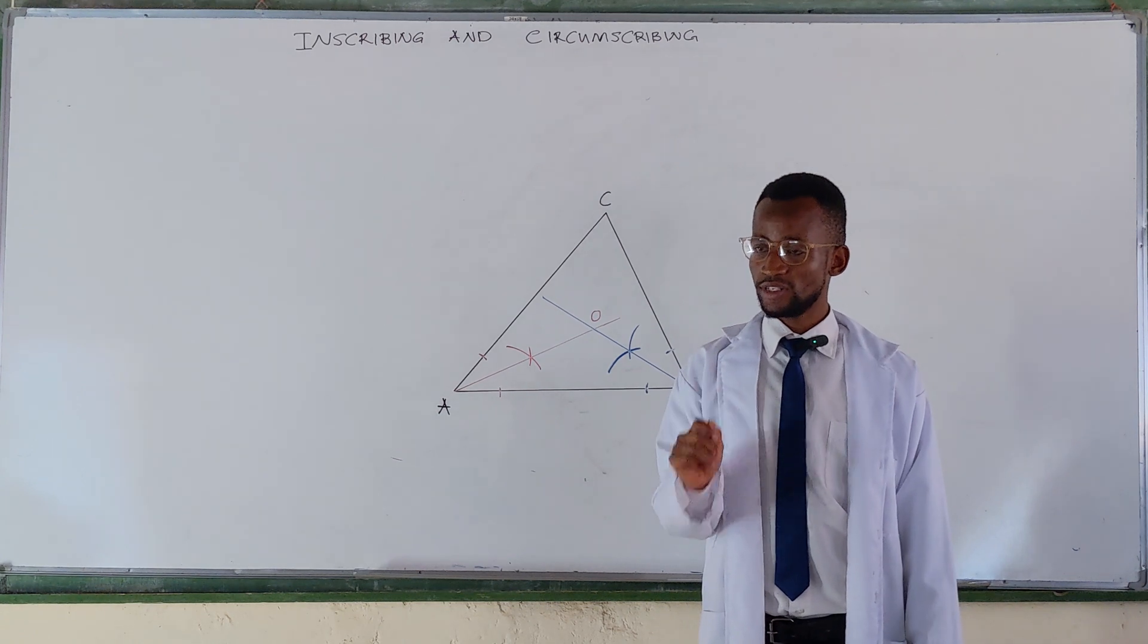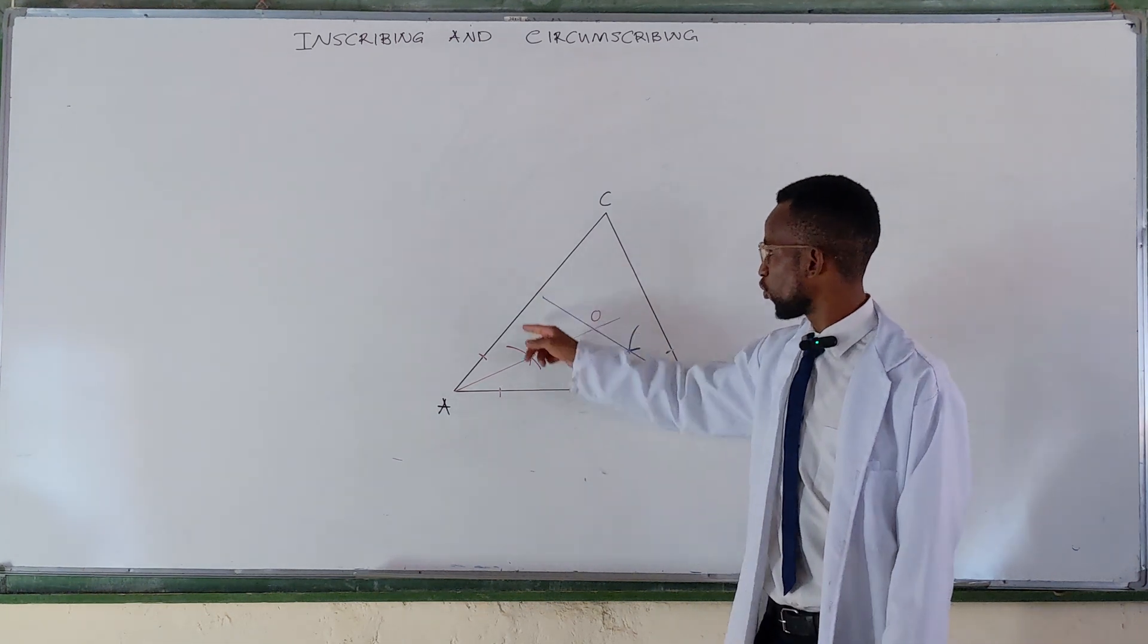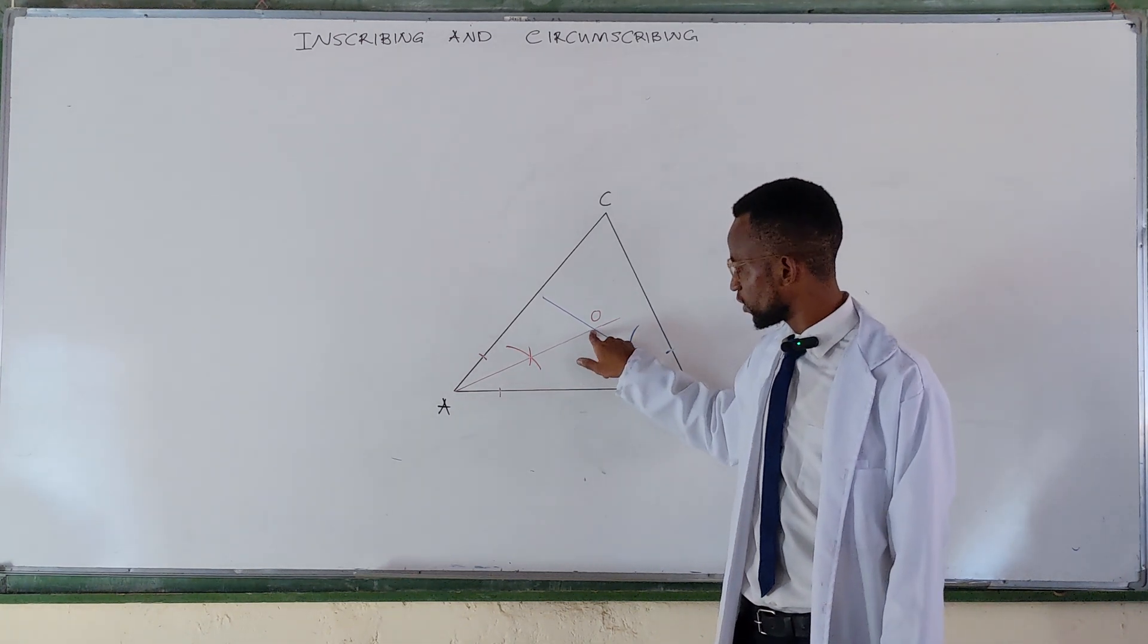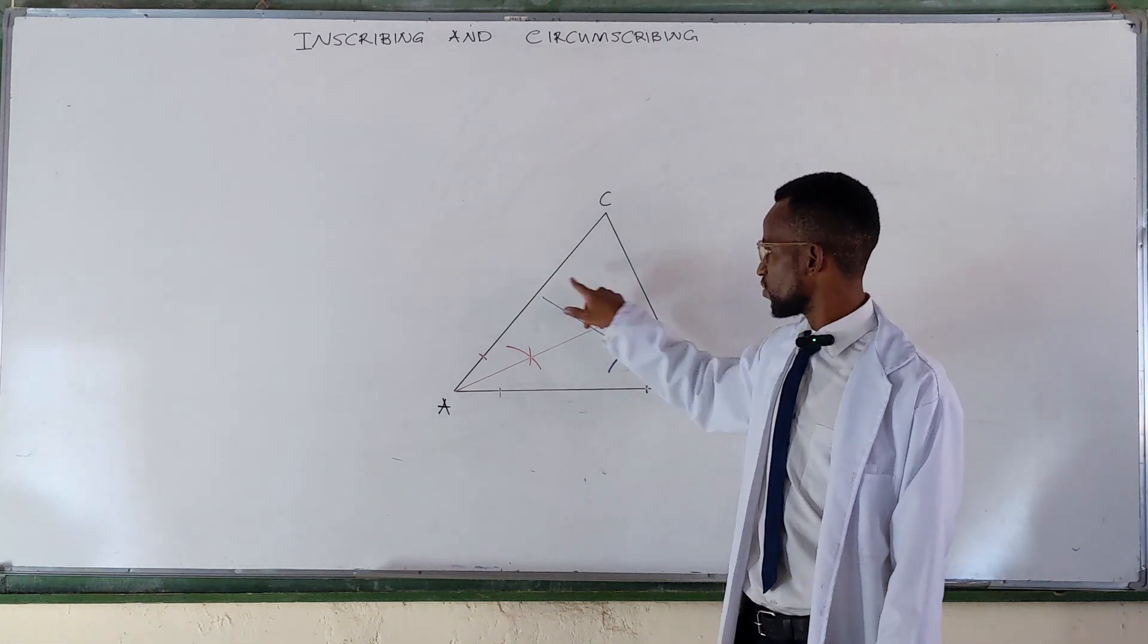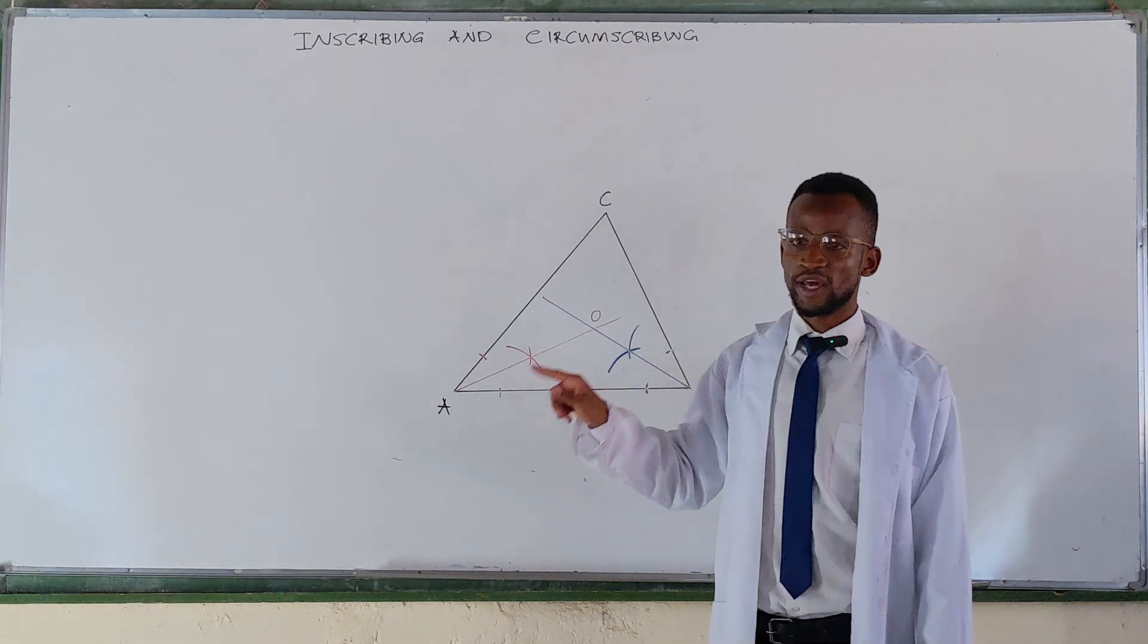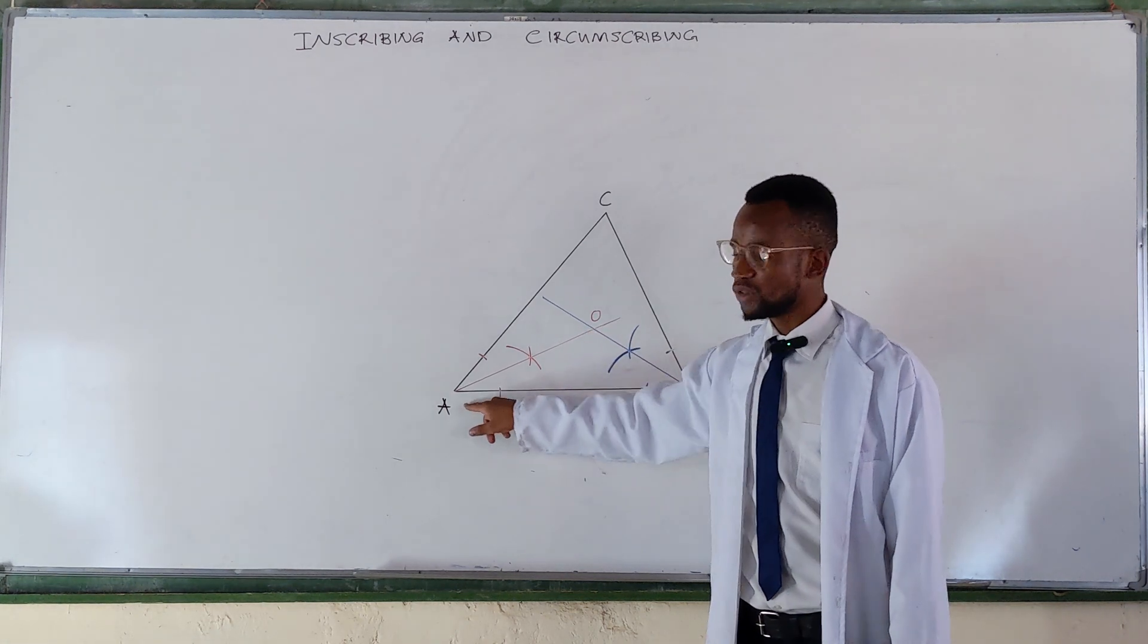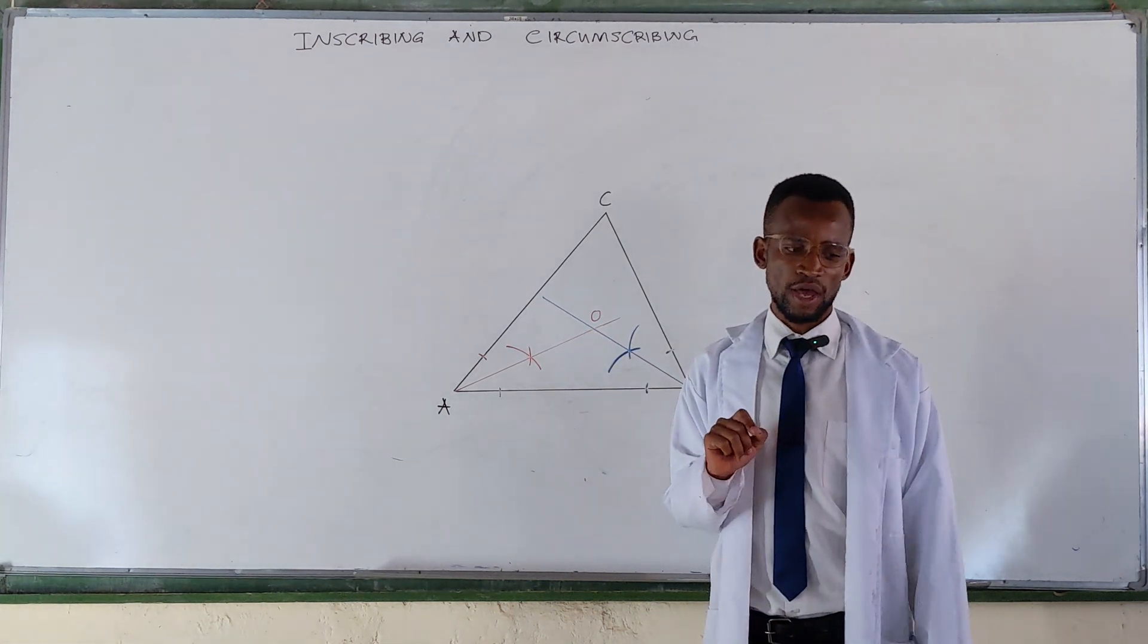So how do we get the radius? We can't just pick any point there and say this is our radius. We draw a line from this point to meet with any of the three edges at an angle of 90 or perpendicular angle.